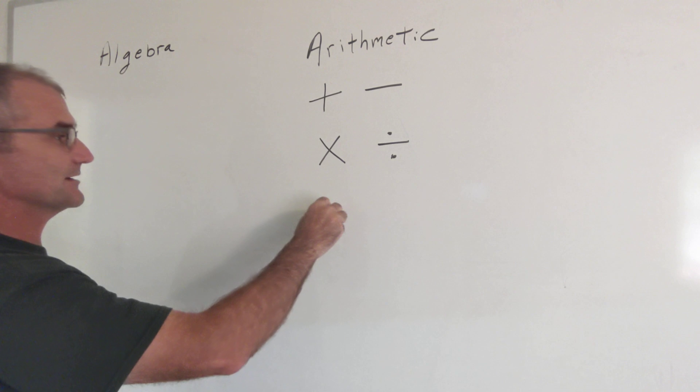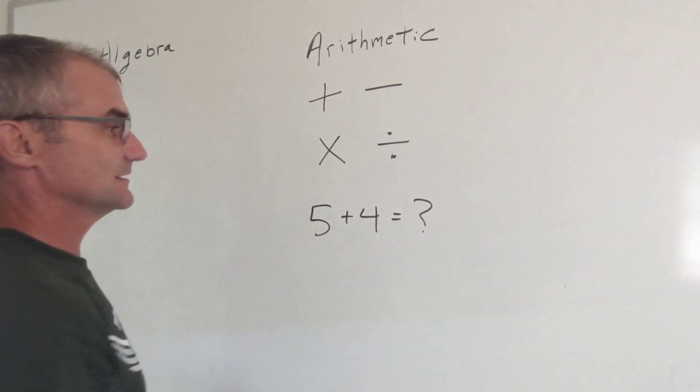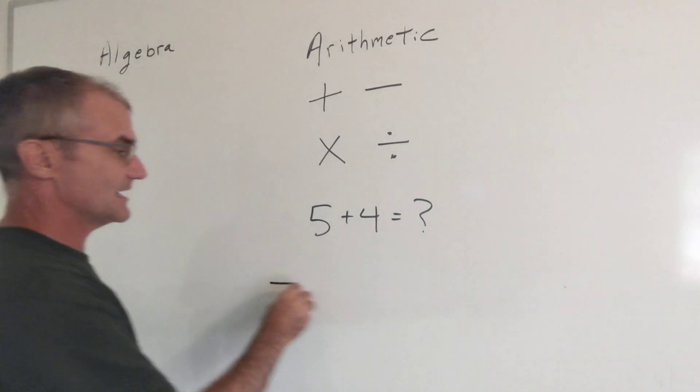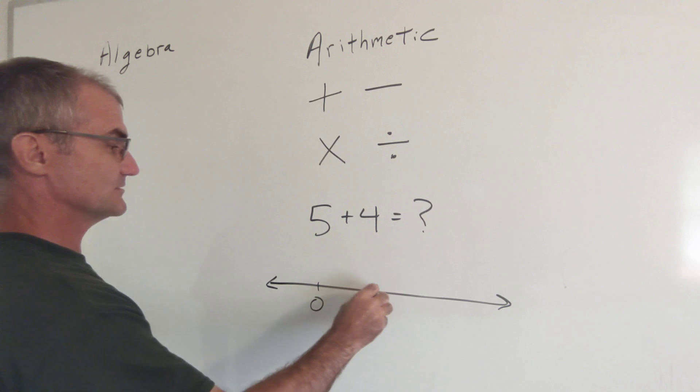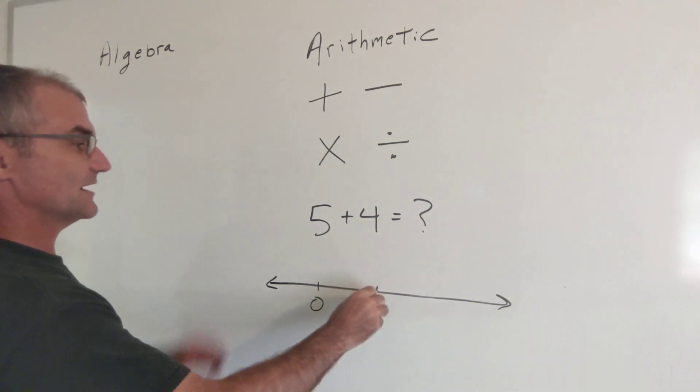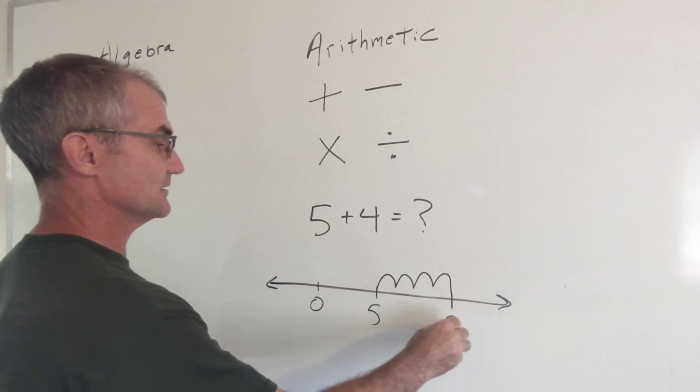Basically you start math class by going 5 plus 4 equals what? And the way you see that is on a number line. You start right here at 0, here you start at 5, from 5 you go plus 1, 2, 3, 4, and you end here at 9.